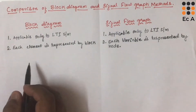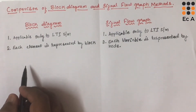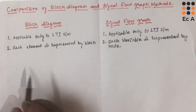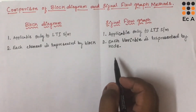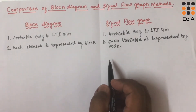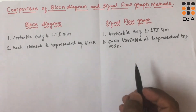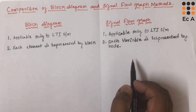In case of block diagram, summing point and takeoff points are represented separately. But in signal flow graph, there are no summing point and takeoff point — both are represented by nodes.